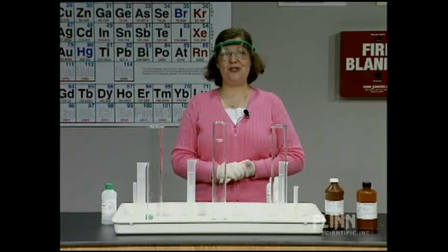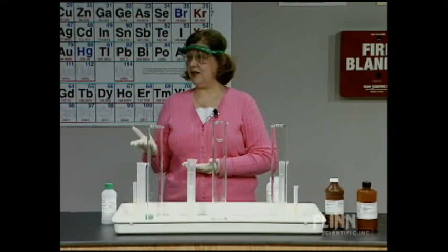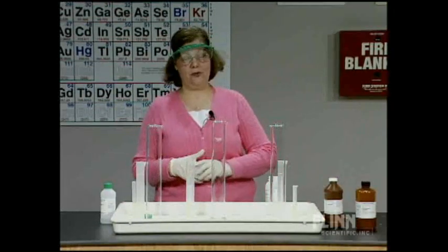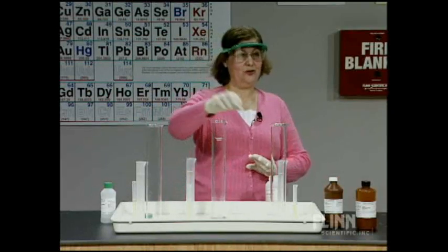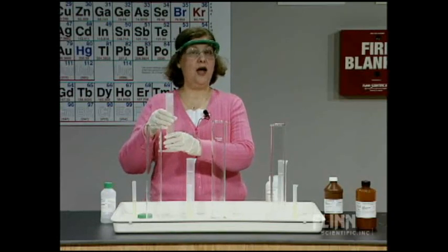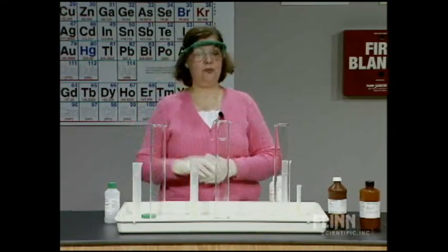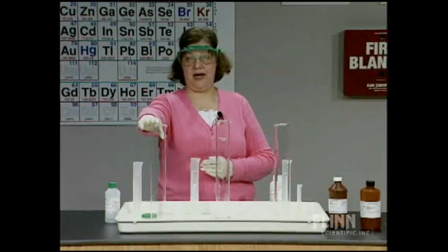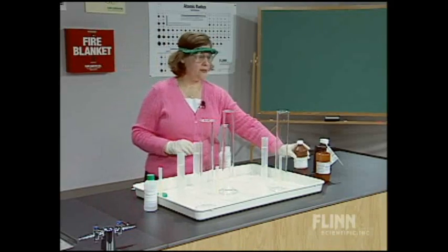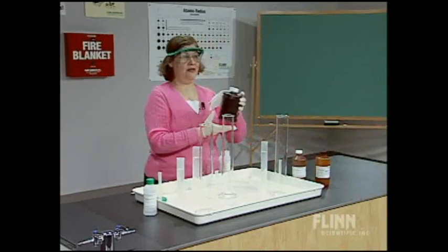Today we're going to do the decomposition reaction of hydrogen peroxide to demonstrate kinetics, and specifically the effect of the concentration of the reactants on the rate of the chemical reaction. I have three large hydrometer cylinders where our reaction is going to take place. I've pre-measured 100 milliliters of hydrogen peroxide in each of three 100-milliliter graduated cylinders — three different concentrations: 3% on my right, 10% on my left, and 30% in the center.